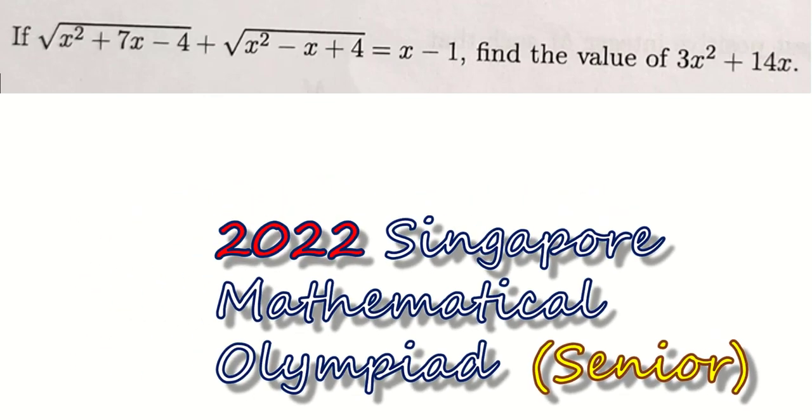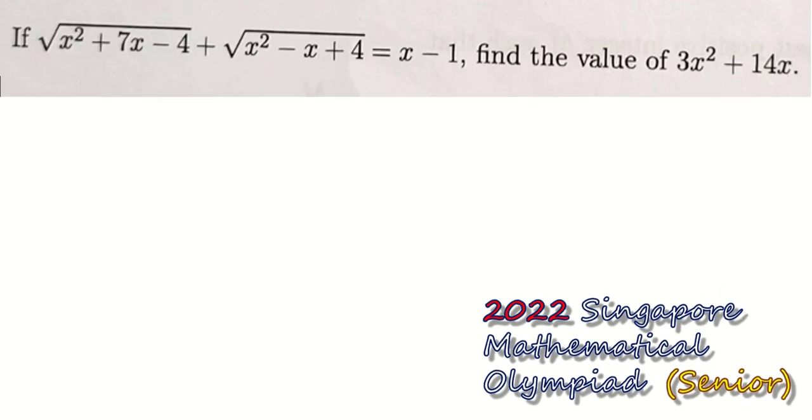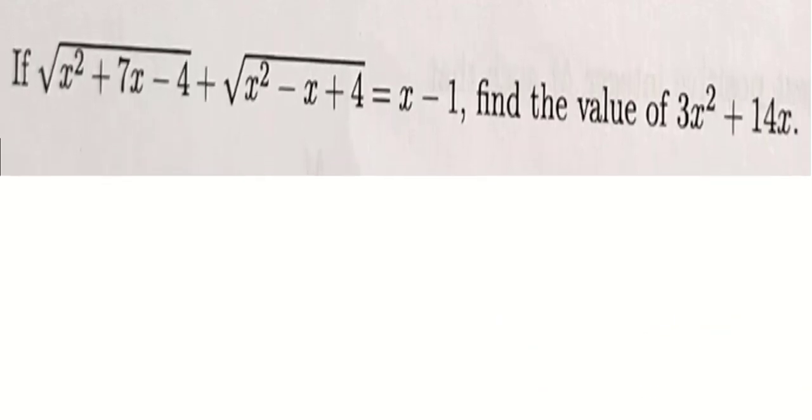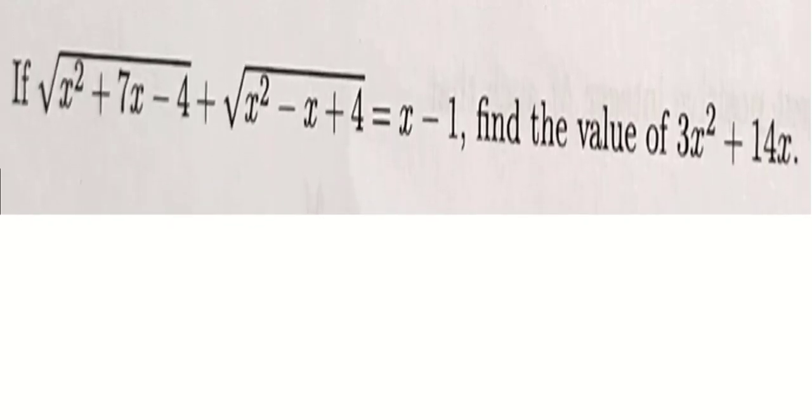For this question, it's given that square root of x squared plus 7x minus 4 plus square root of x squared minus x plus 4 equals to x minus 1. We are asked to find the value of 3x squared plus 14x.